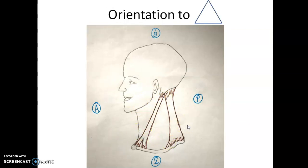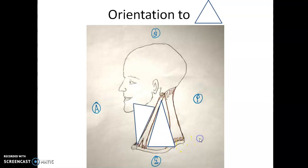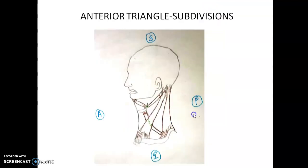Regarding the orientation of both triangles with respect to one another: the apex of the posterior triangle is pointing upwards while its base is towards the clavicle. The anterior triangle is exactly the reverse — its apex points towards the sternum while the base points towards the base of the mandible.